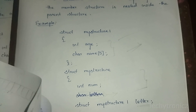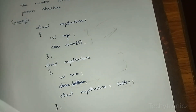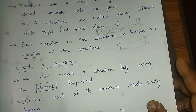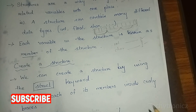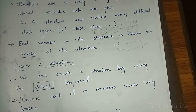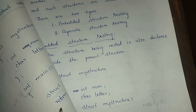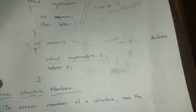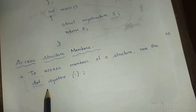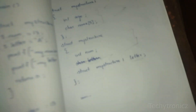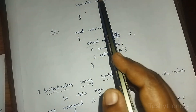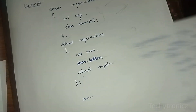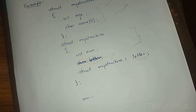In summary: a structure is a group of several related variables in one place, where different types of data can be stored. We covered how to create a structure, how to create structure variables, how to access members using the dot operator, initialization using the assignment operator, initializer list, and designated initializer list. So students, this is structures in C. Thank you.